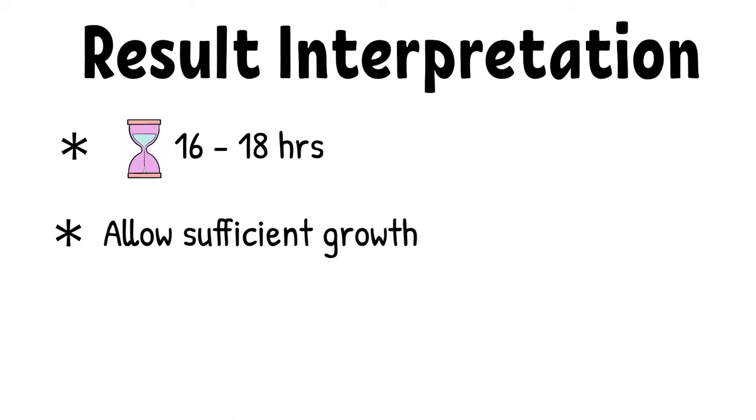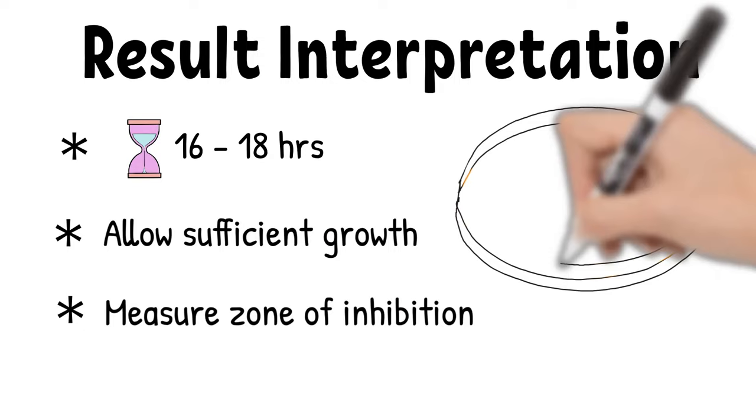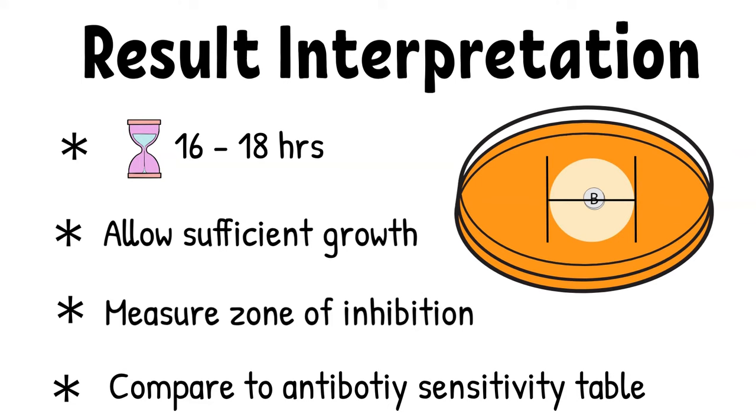A control plate should be read prior to reading the patient plate. Measure the zone of inhibition from the control plate and then compare to the sensitivity table. If the inhibition zone is correct according to the table, then the patient plate may be read.